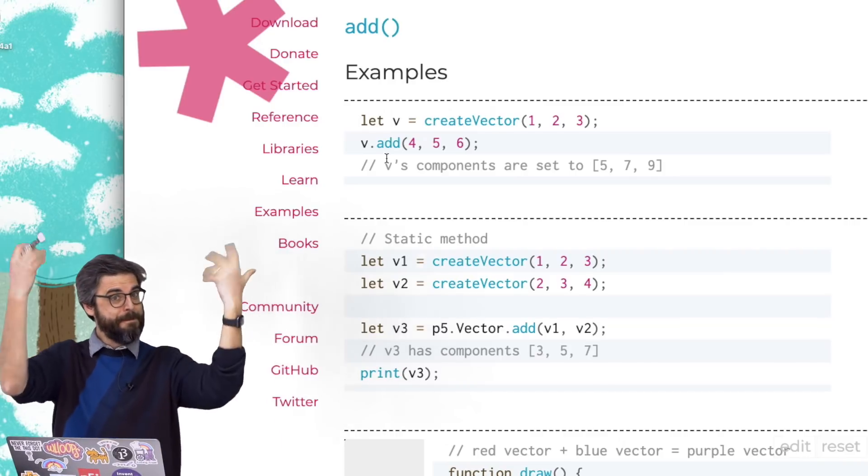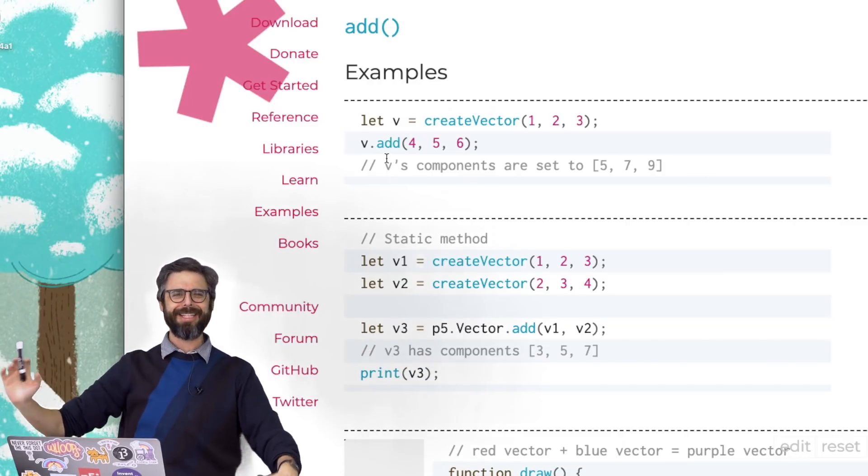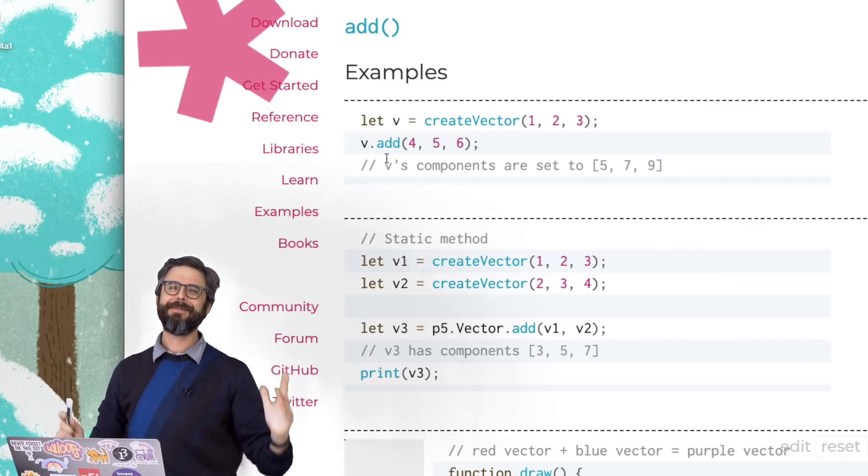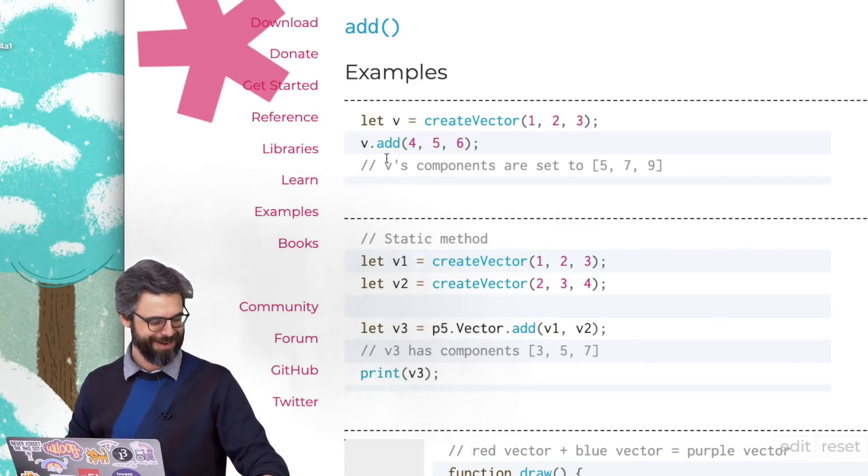All right? So maybe you've decided, forget about this. This is where I draw the line. This static method stuff drove me crazy. I'm out. I'm out. But if you're not, if you want to keep going with the nature of code, I'll see you in the next video. Bye.